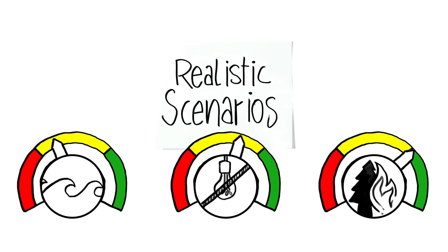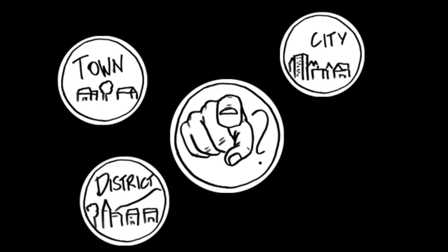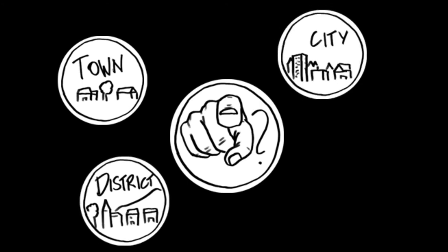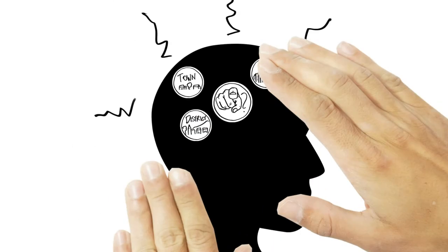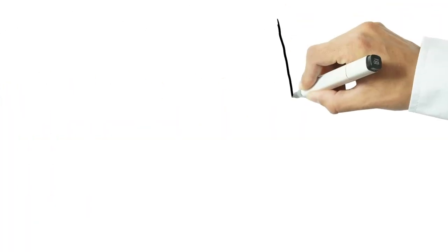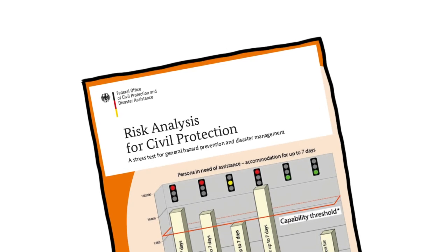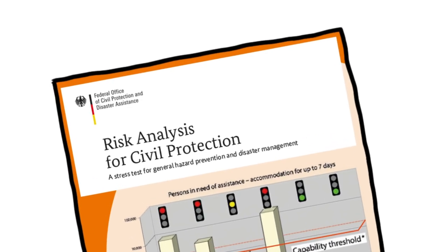For instance, in the event of a power outage — are you responsible for disaster management? Do you want to find out if the preparedness planning in your municipality is up to date? Take the theoretical stress test. The guideline 'Risk Analysis for Civil Protection: A Stress Test for General Hazard Prevention and Disaster Management,' issued by the Federal Office of Civil Protection and Disaster Assistance, BBK.